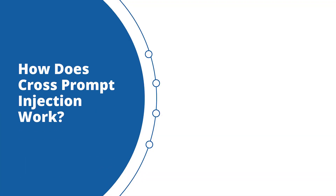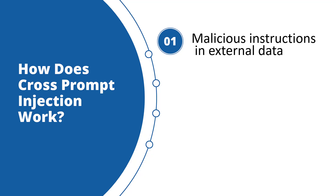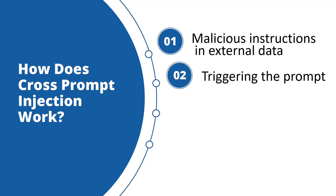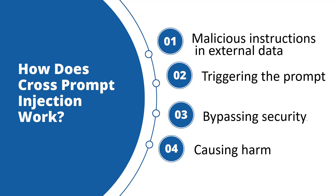Now let us discuss how it works. First, malicious instructions in external data: the attack involves embedding malicious instructions within an external data source such as a PDF, an email, or a web page. Second, triggering the prompt: a user interacts with the LLM and the LLM retrieves and processes the external data which includes the hidden malicious prompt. Third, bypassing security: because the model cannot reliably tell 'this is data' versus 'this is instruction,' it may follow those hidden commands. As an LLM does not differentiate between system instructions and user input, it can be tricked into following the malicious instructions embedded in the external data, causing harm — such as leaking sensitive information or executing a harmful function.